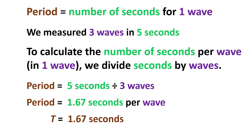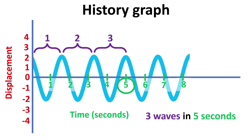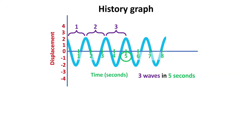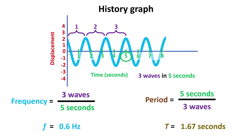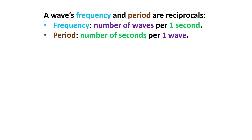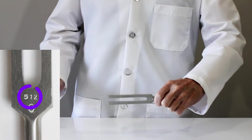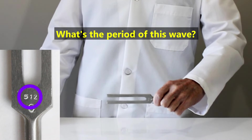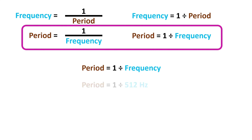Our final topic is the reciprocal relationship between a wave's frequency and its period. We use the same history graph to calculate a wave's frequency and to calculate its period. For the frequency calculation, we divided the number of waves by the seconds. For the period calculation, we divided the number of seconds by the waves. This tells us that a wave's frequency and period are reciprocals of each other. We can switch between frequency and period by dividing the number one by the other's value. Here's a tuning fork with a frequency of 512 Hz — what's the period of the waves this tuning fork makes? To convert from frequency to period, we divide one by the frequency: one divided by 512, giving a wave period of two thousandths of a second.